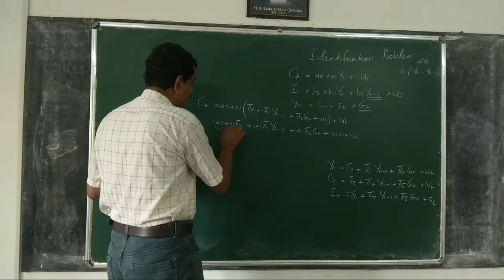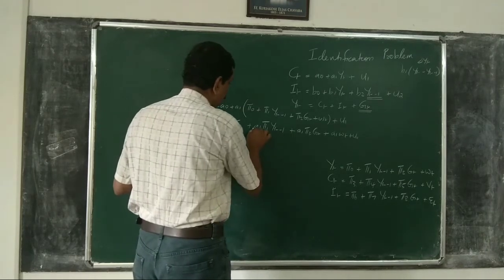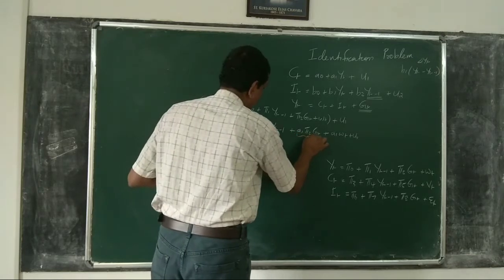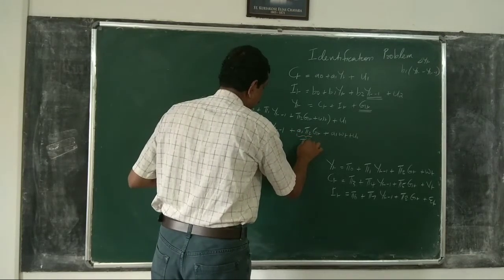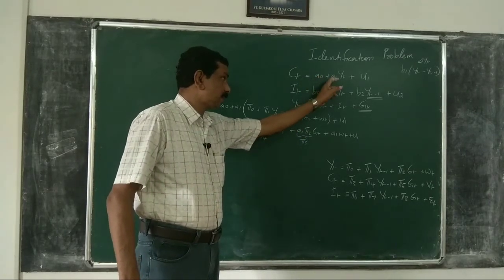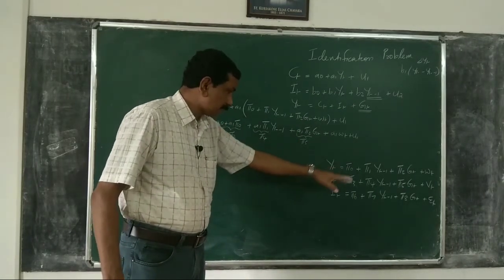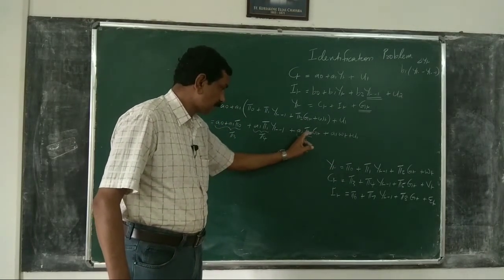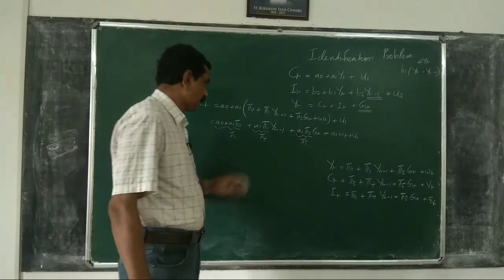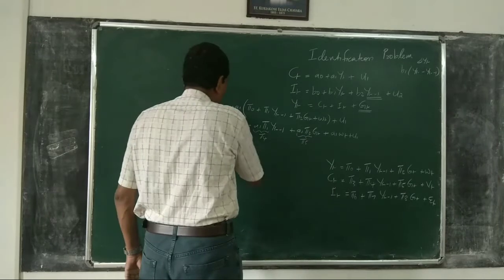Now, this constant quantity is written as π3 — you can verify it. A1·π1 gives π4, and A1·π2 gives π5. Our aim is to estimate a0, a1, b0, b1, b2, etc. Once we estimate the π's, it is possible to retrieve a1, a2, etc. — that is a different issue we will discuss later. So we have derived the reduced form equation for Ct.